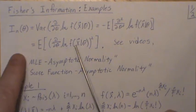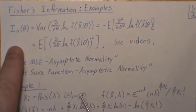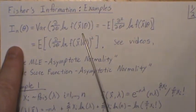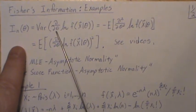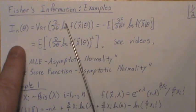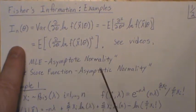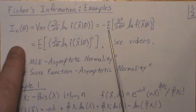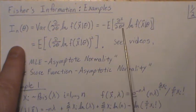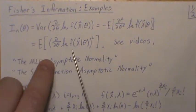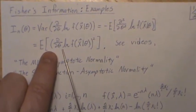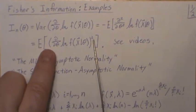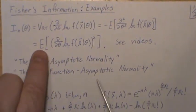As a reminder, Fisher's information for a sample of size n can be calculated as the variance of the partial derivative with respect to theta of the log likelihood, or minus the expected value of the second derivative of the log likelihood with respect to theta, or you take the derivative of theta of the log likelihood, square it, and then take the expected value.